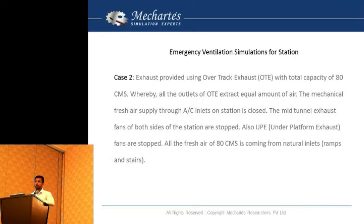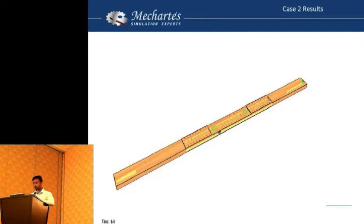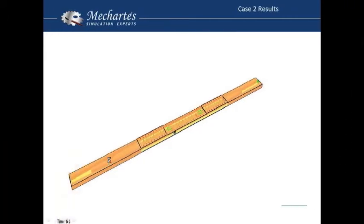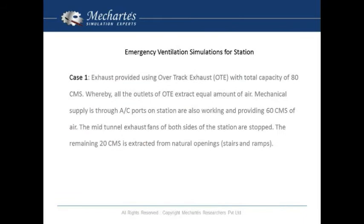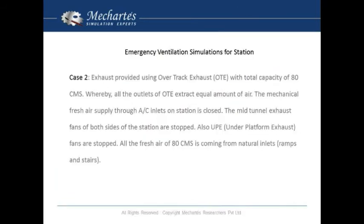Then we tried another design with similar overtrack exhaust, but not supplying the air from the air conditioning supply, instead taking all from a dedicated shaft and from the ramps and station intakes, natural intakes. In this case, this was more or less similar behavior with visibility slightly better in this area. These are the fire exits, so visibility close to the fire exit was better, but still it was very dark, and the evacuation time was still very large.